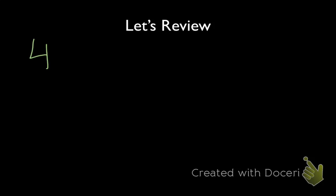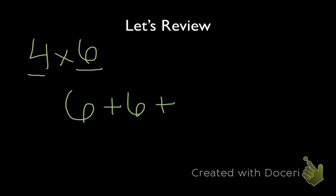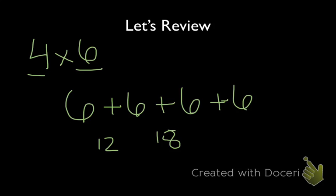Let's review. You already know that if we were to have multiplication of whole numbers, we can use repeated addition. For example, if I had 4 times 6, that's basically saying I'm taking 4 groups of 6, and I can represent that as 6 plus 6 plus 6 plus 6. 6 plus 6 is 12, plus another 6 is going to be 18, plus another 6 is going to be 24.